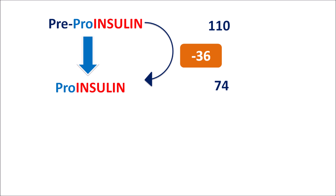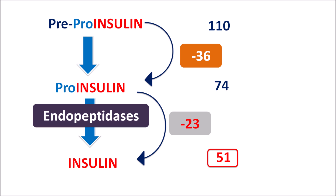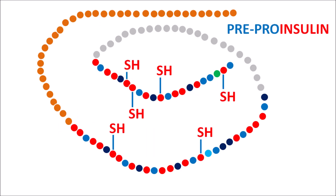Pro-insulin is the immediate precursor for insulin. It is converted into insulin by endopeptidases, where around 23 amino acids are deleted to produce insulin with 51 amino acids. These 23 amino acids deleted in this last step are nothing but the C-peptide. So C-peptide is deleted when pro-insulin is converted into insulin.